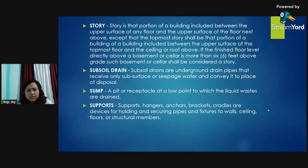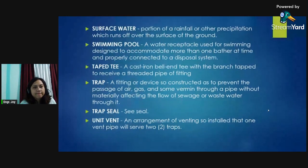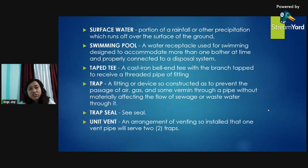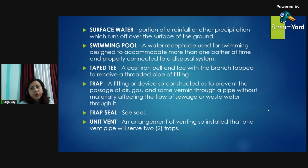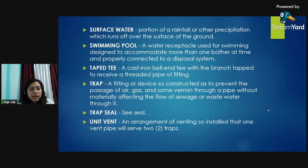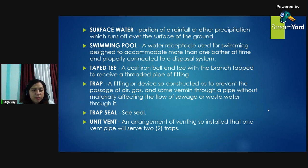Sump: a pit or receptacle at a low point to which liquid wastes are drained. Supports: hangers, anchors, brackets, and cradles are devices for holding and securing pipes and fixtures to walls, ceilings, floors, or structural members. Surface water: a portion of rainfall or other precipitation which runs off over the surface of the ground. Swimming pool: a water receptacle used for swimming designed to accommodate more than one bather at a time and properly connected to a disposal system. Tape T: a cast iron bell-and-spigot T which has a tapped top to receive a threaded pipe or fitting. Trap: a fitting or device so constructed as to prevent the passage of air, gas, and vermin through a pipe without materially affecting the flow of sewage or waste water through it. Trap seal: same as the seal. Unit vent: an arrangement of venting so installed that one vent pipe will serve two traps.